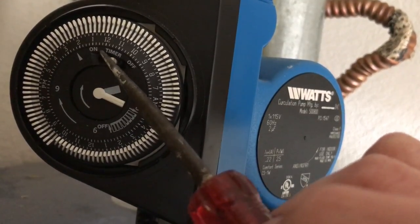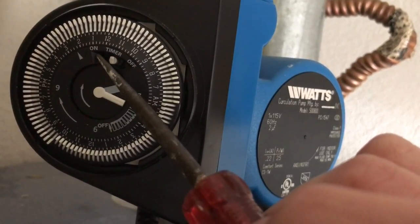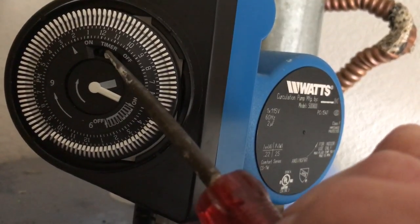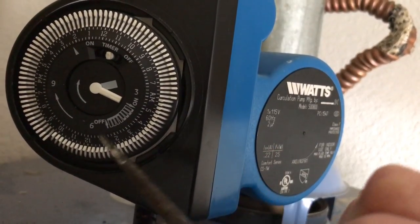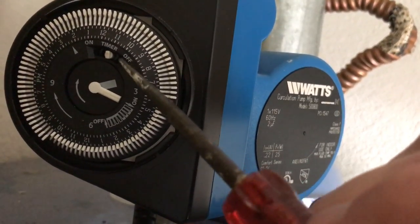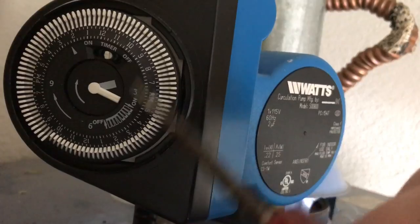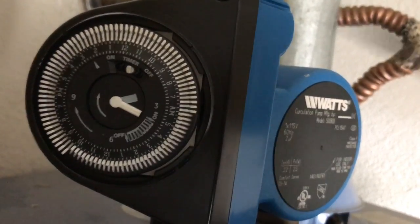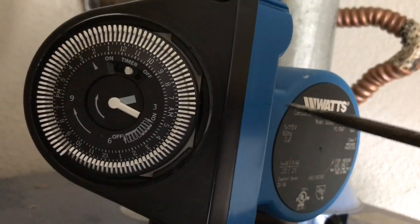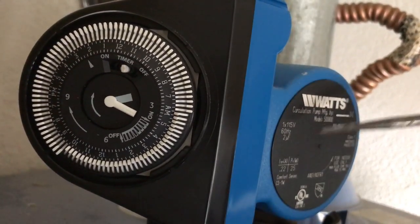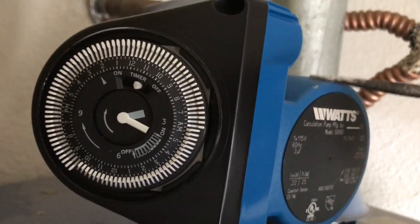On will make sure that this pump runs 24 hours per day, so it's always on. Timer lets you set these timing pins, so it's only on or off when you want it to be. And then off is going to be off always, and your water system will act as if you don't have this unit. Water's still going to flow through your pipes, you just won't have this unit itself adding to that.